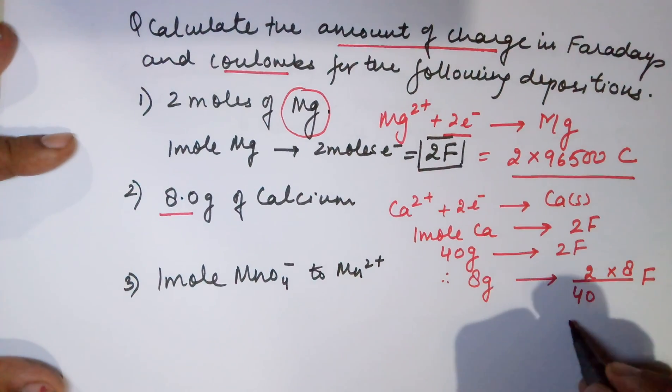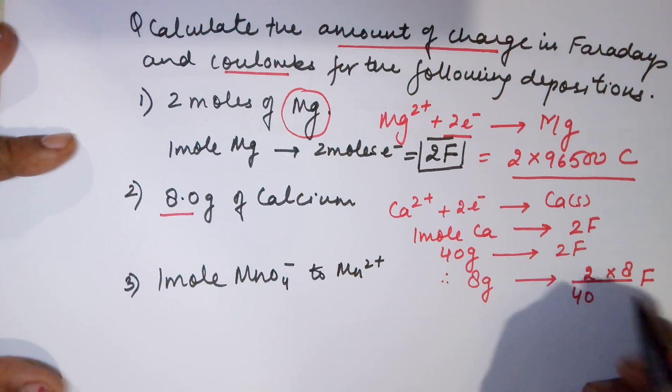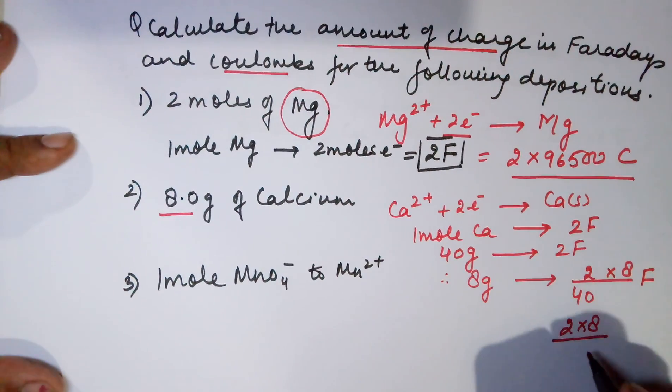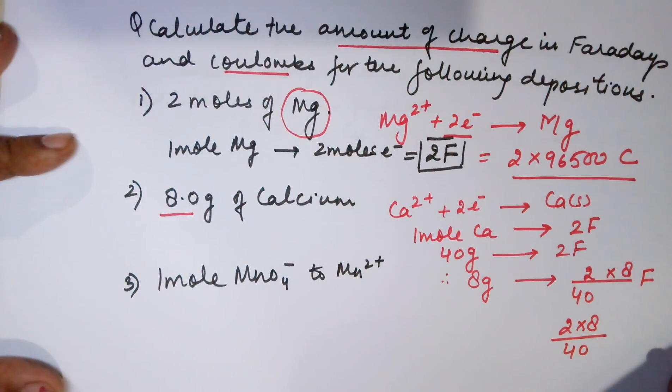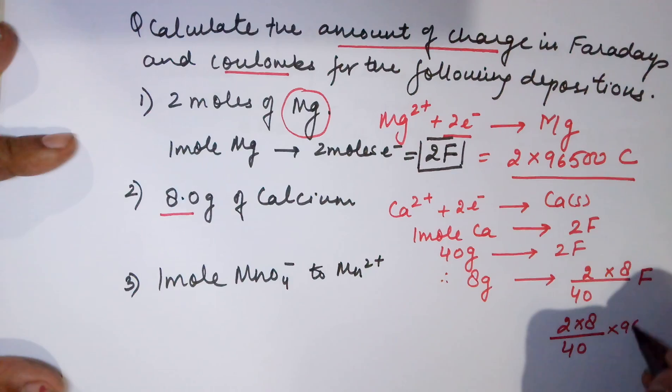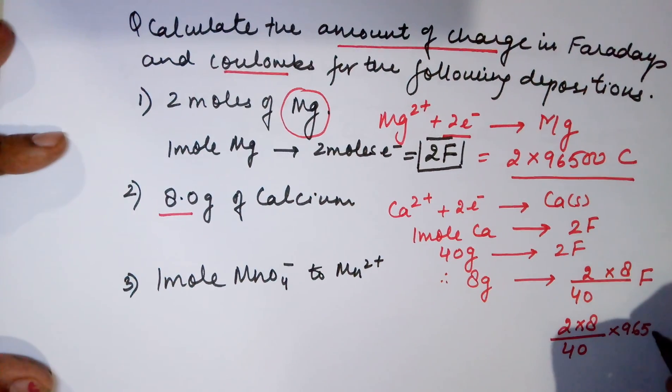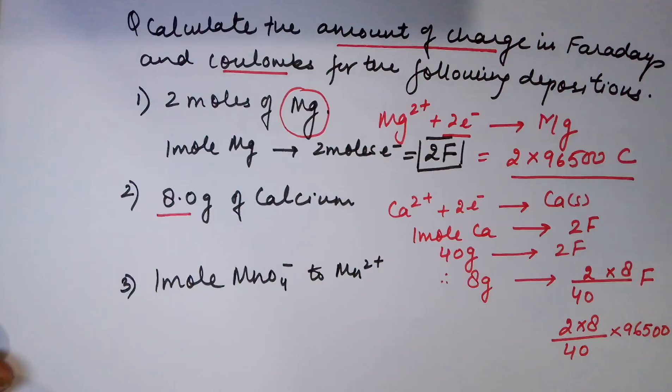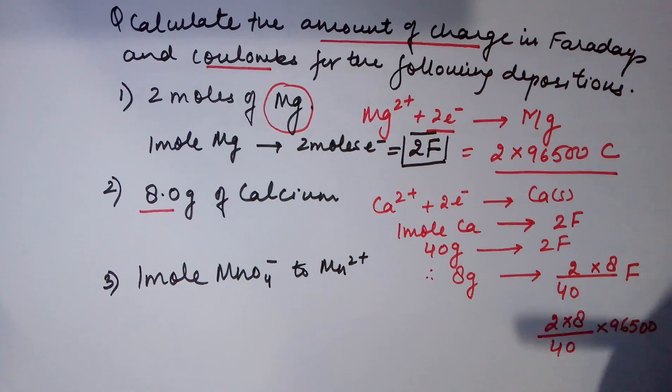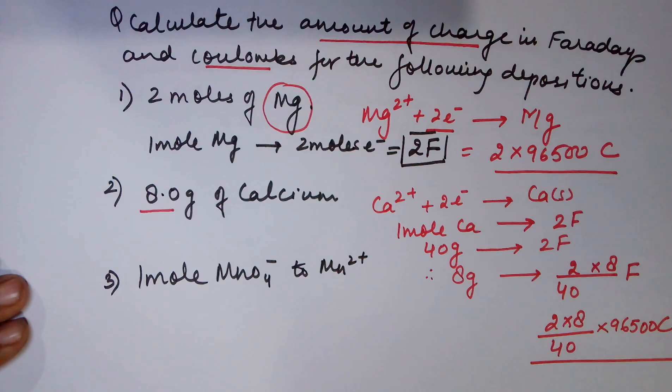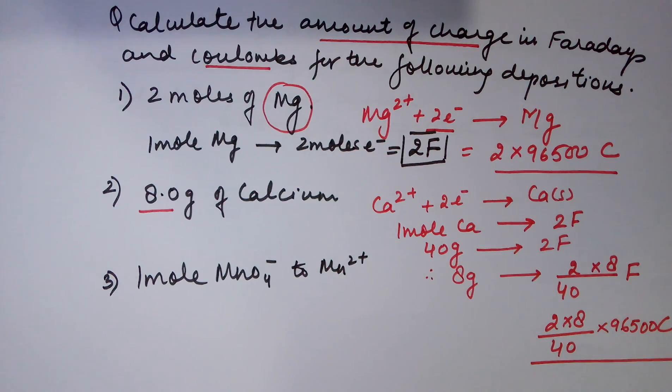If you want the same answer in coulombs, the value becomes 2 × 8 in the numerator divided by 40, and you need to multiply it by 96500 coulombs to get the answer in coulombs. For the answer in coulombs, you need to multiply it by Faraday's constant. Moving to the third part of the question.